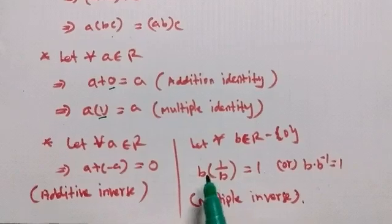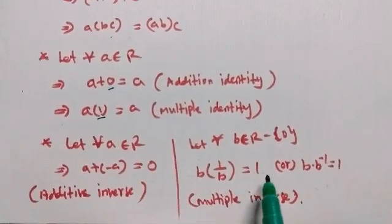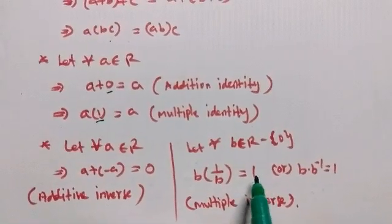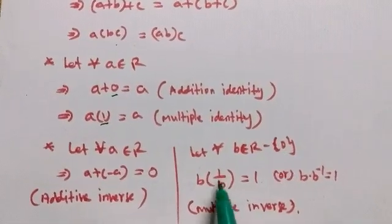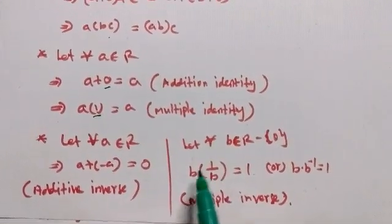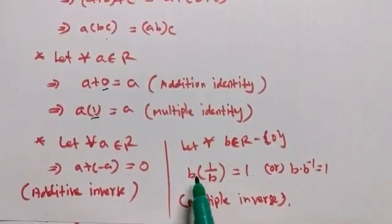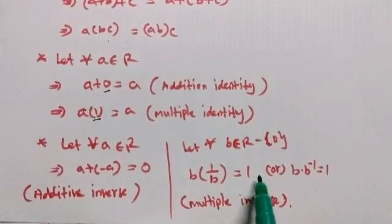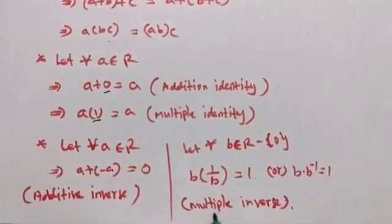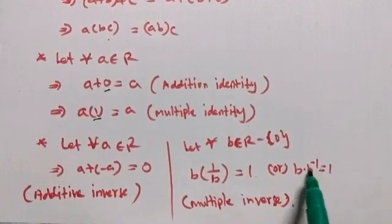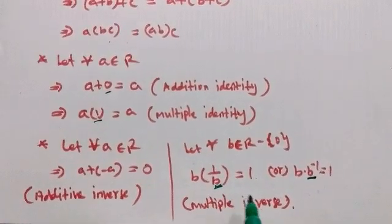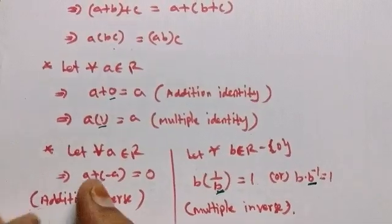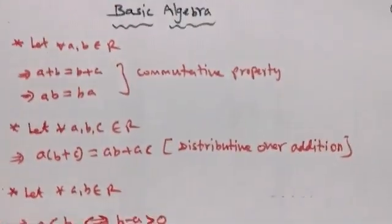The multiplicative inverse: for any number b, the multiplicative inverse is 1 by b, where b is not equal to 0. When b is multiplied by 1 by b, the result equals 1.